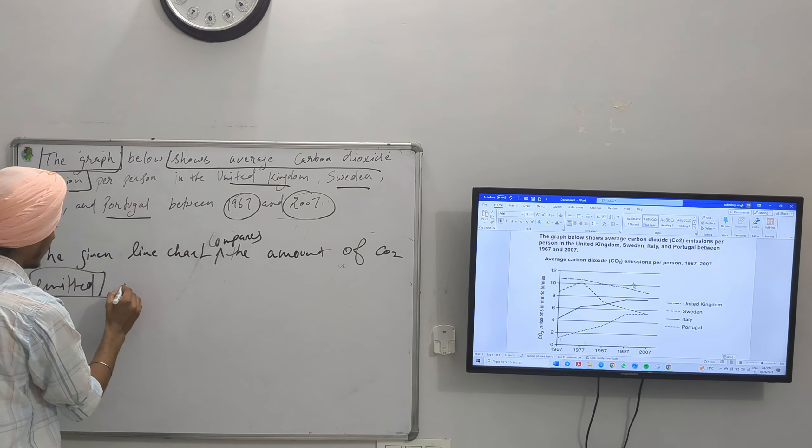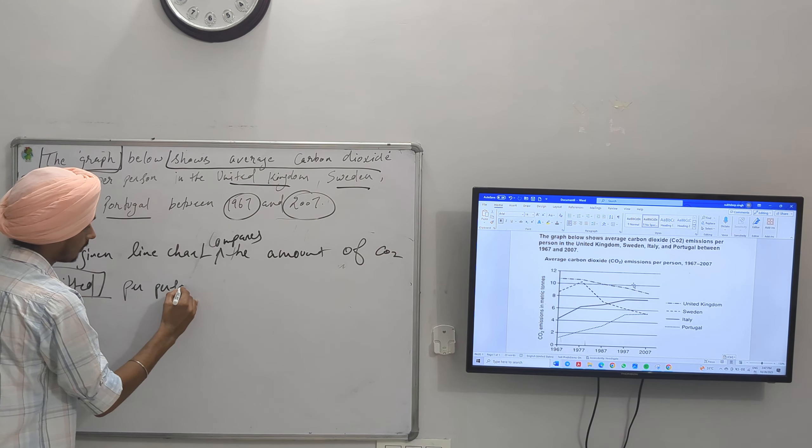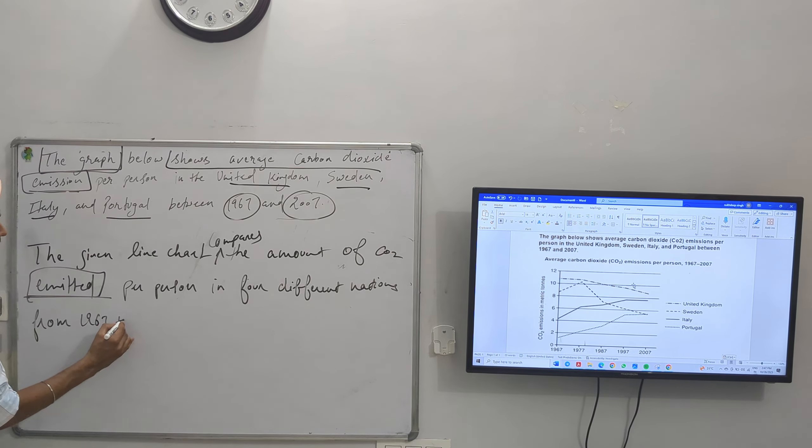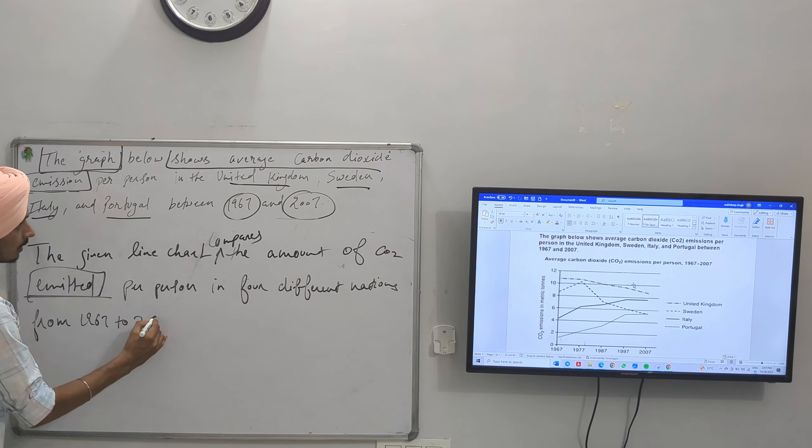The amount of CO2 emitted per person in the United Kingdom, Sweden, Italy and Portugal in four different nations. Instead of writing 'between,' I am going to write 'from 1967 to 2007.' This is how we introduce the chart.